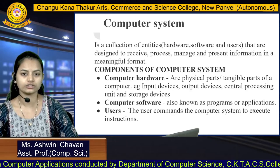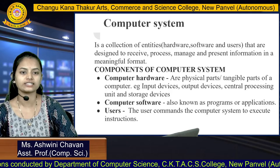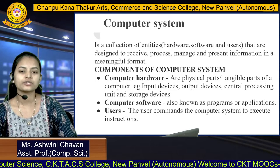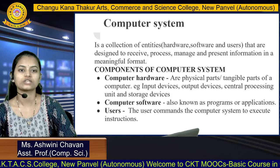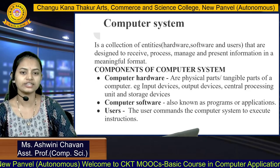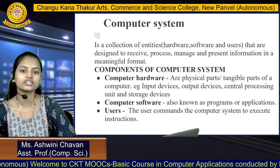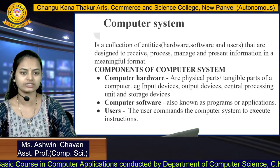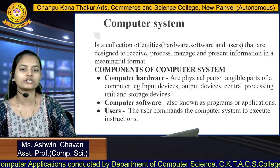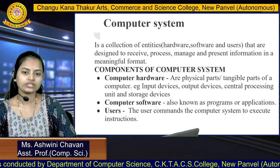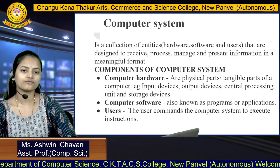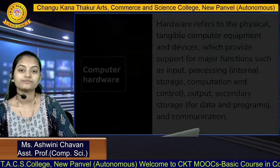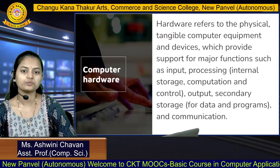The components elaborated: first is computer hardware — these are the physical or tangible parts, meaning we can feel or touch them. Hardware components include input devices like the keyboard and mouse, output devices like the monitor and speakers, as well as the central processing unit and storage devices. Software components are programs or applications that run inside the computer system and are intangible — we can't touch them. The user is the one who sends commands and instructions to the computer system to process requests.